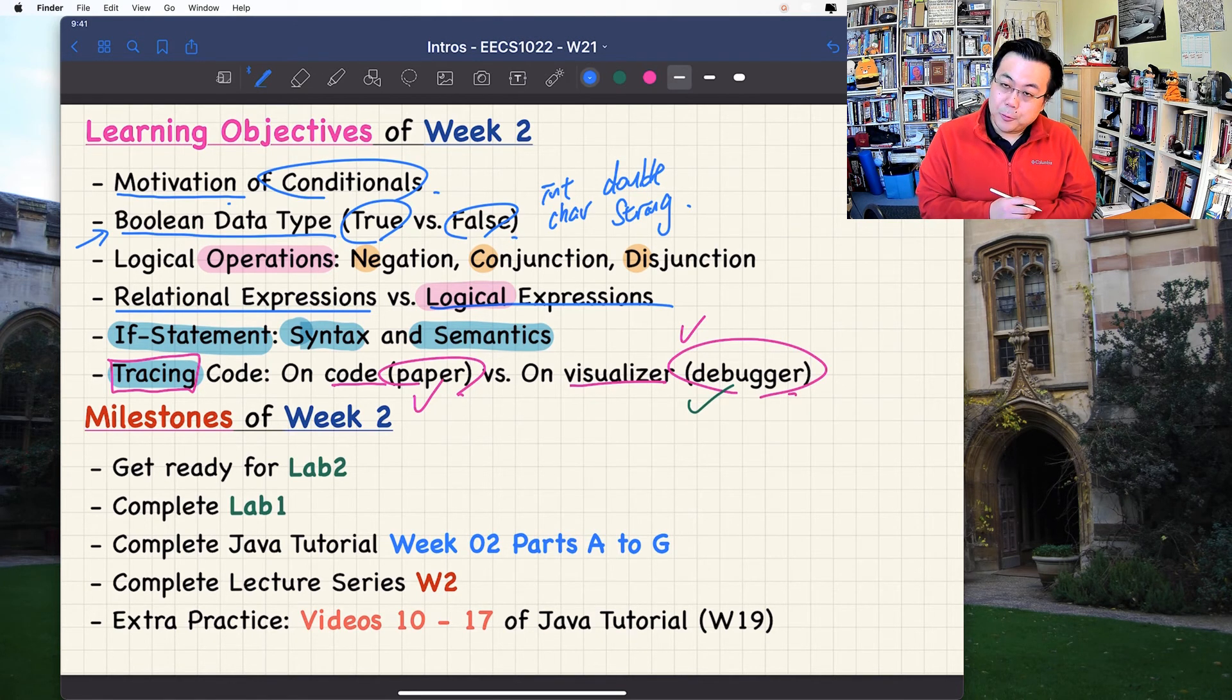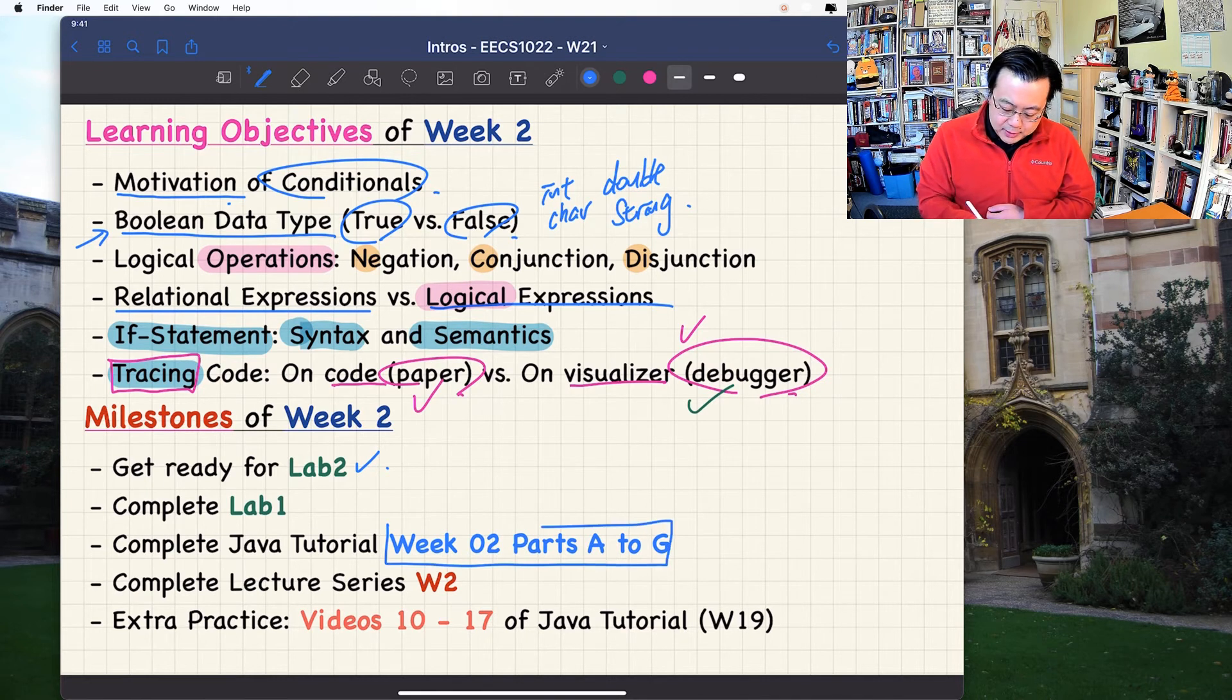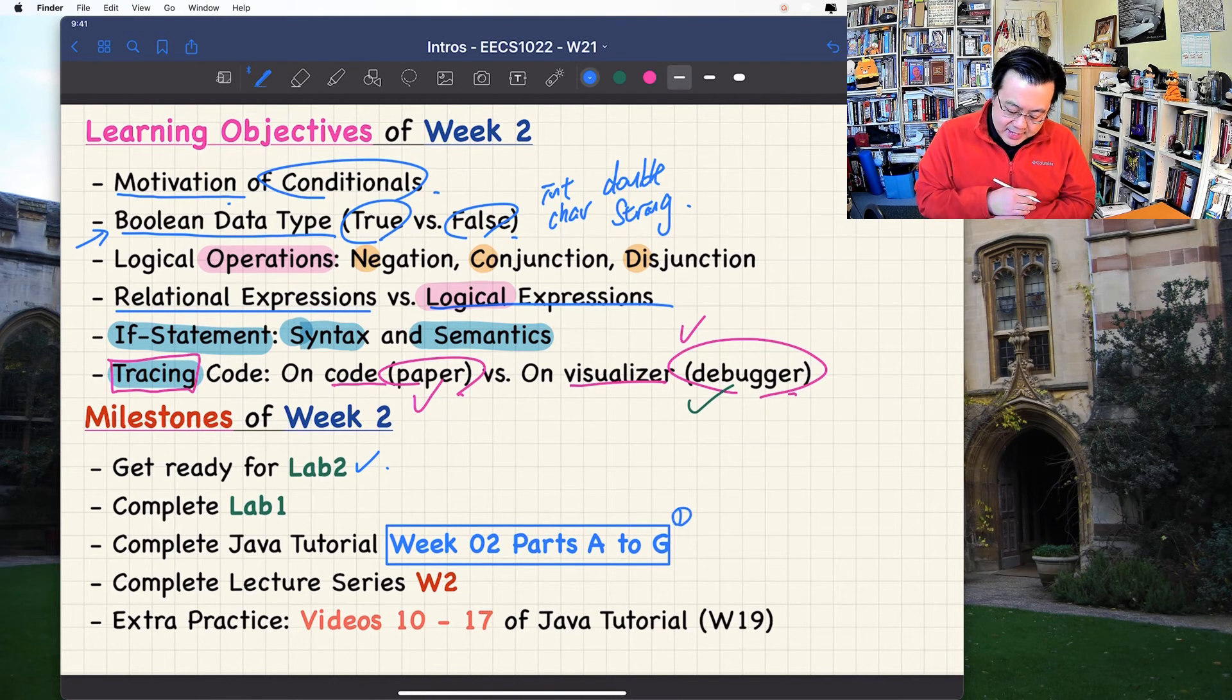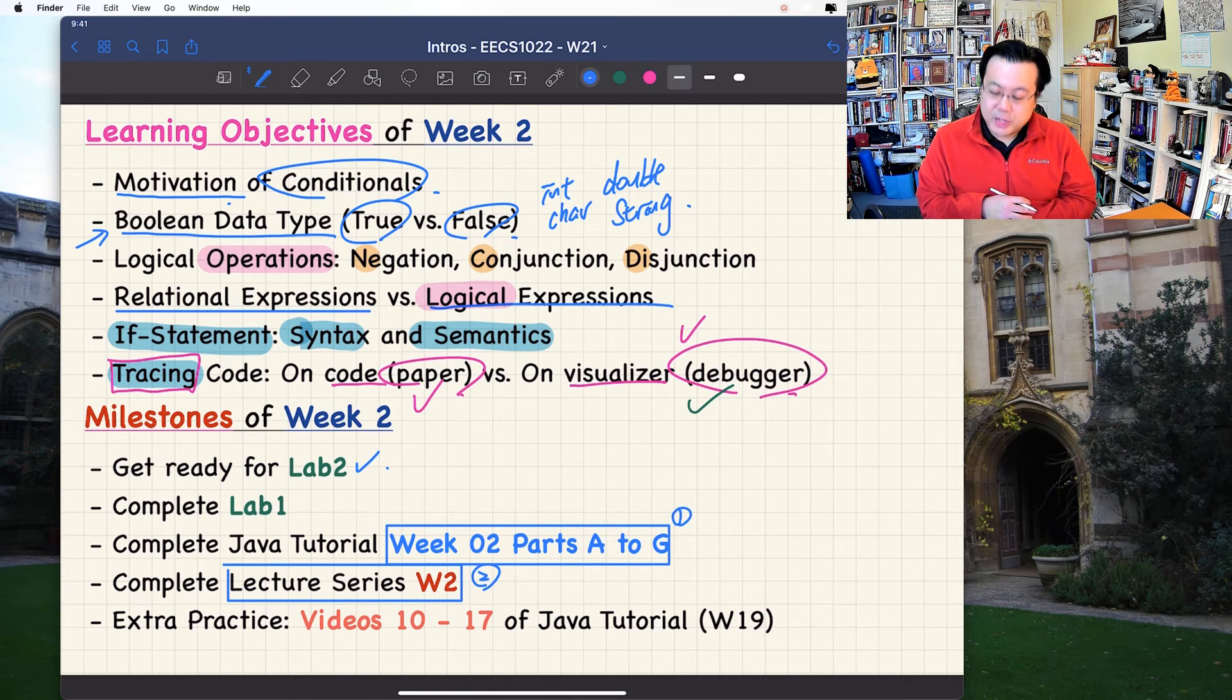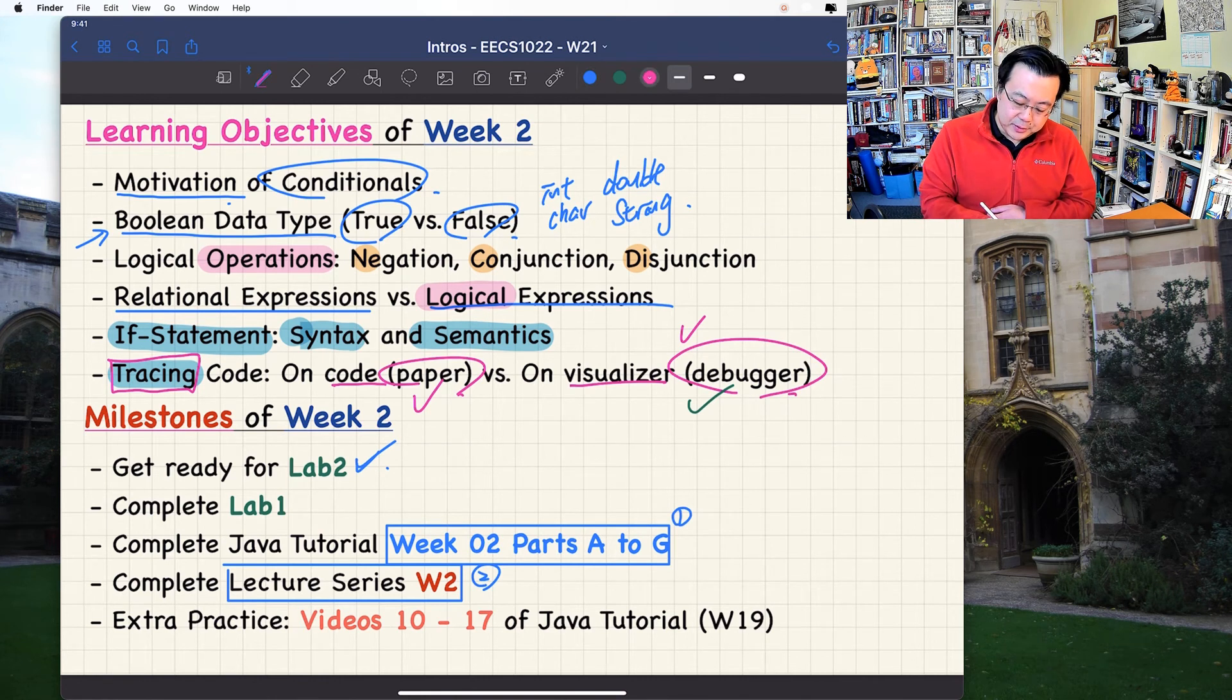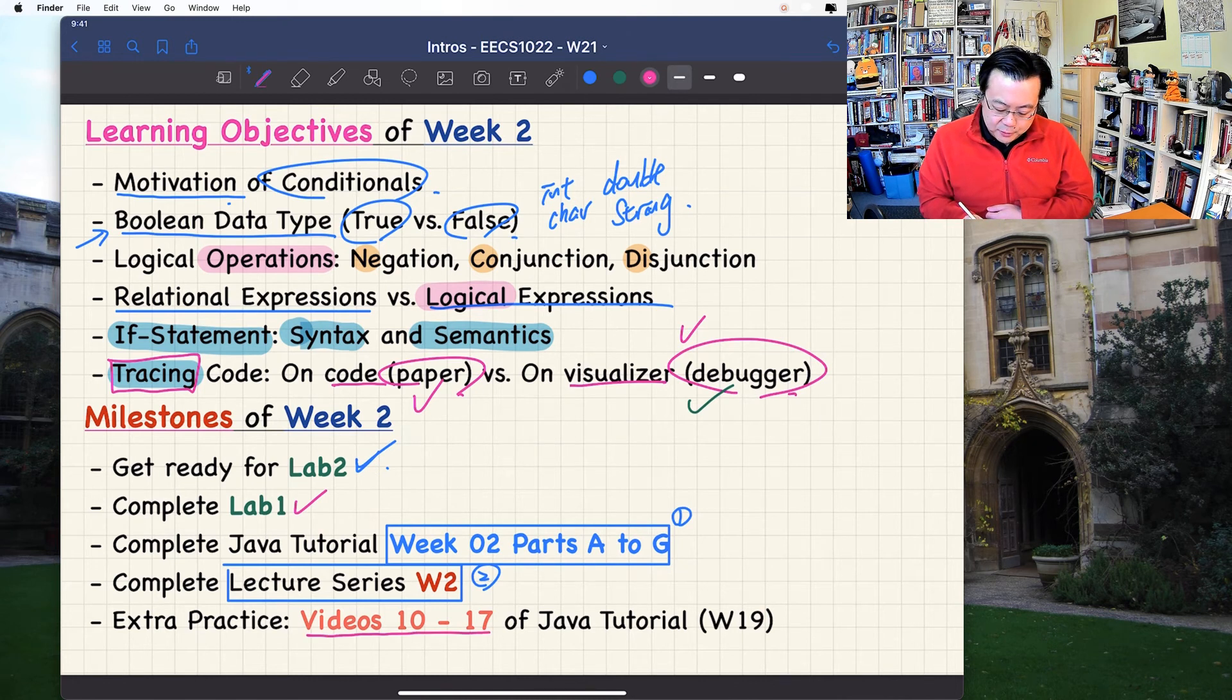What are the milestones for week number two? You want to get ready for lab number two, which will be released according to the calendar this coming Friday. I would say finish the weekly tutorial video for Java first, the Java weekly tutorial video. Do this first. Then you want to complete the lecture series for week number two. Do this second. Complete in this sequence. After these two, you'll be ready for lab number two. You're also supposed to complete lab number one, which is also due Friday. Extra practice will be video 10 to video 17. Let me show it to you very quickly.